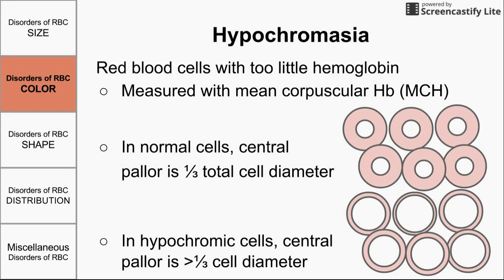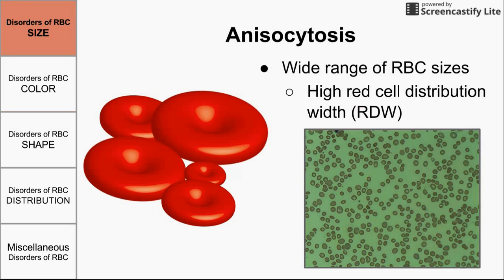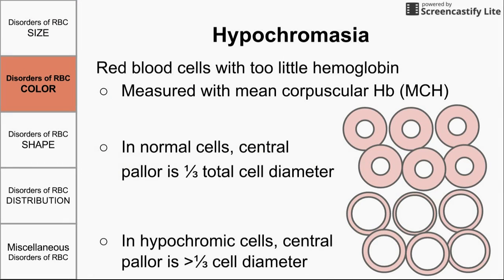Now let's jump into disorders of red blood cell color. Normally, on a blood smear you see red blood cells with a little pallor — a white region on the inside. This white region comes from the shape of red blood cells: the red cell is a biconcave disc, meaning both sides of the disc cave in. That caved-in region shows up as white on the blood smear. In normal red blood cells, that pallor should be about one-third of the total cell diameter.